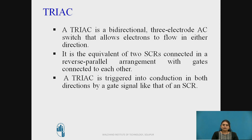TRIAC is a bidirectional three-electrode AC switch that allows electrons to flow in either direction. It is equivalent to two SCRs connected in reverse parallel arrangement with gates connected to each other. Since two SCRs are connected in anti-parallel, we get the VI characteristics in both directions — in the first and third quadrants — which is why TRIAC is called a bidirectional device.